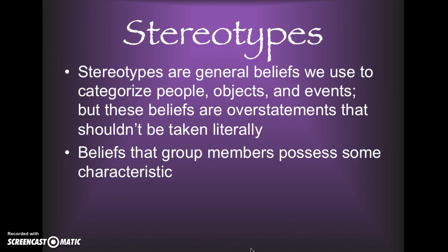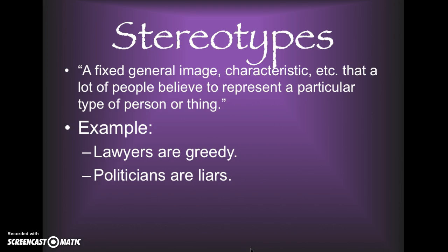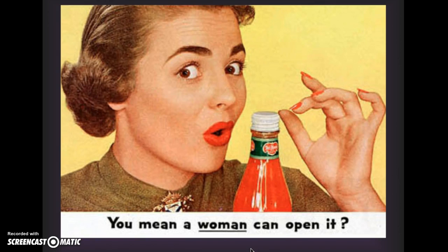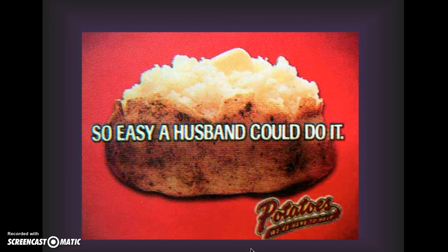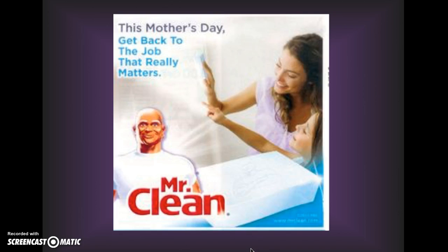Stereotypes are general beliefs we use to categorize people, objects, and events, but these beliefs are overstatements that shouldn't be taken literally — beliefs that group members possess some characteristic. Stereotypes are a fixed general image or set of characteristics that a lot of people believe represent a particular type of person or thing. For example: lawyers are greedy, or politicians are liars. Here's an example of a stereotypical ad saying that a woman can't open a jar of ketchup. This was probably from the 1940s or 50s — a genuine Del Monte ketchup ad: 'So easy a husband could do it.' So they're stereotyping husbands as unable to cook. This Mother's Day, get back to the job that really matters — Mr. Clean — stereotyping women by saying the only job that really matters is cleaning.